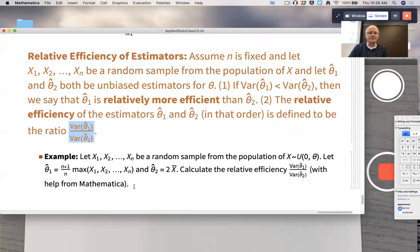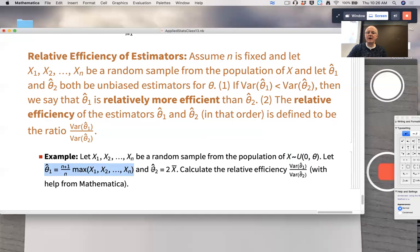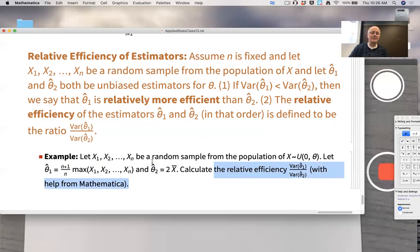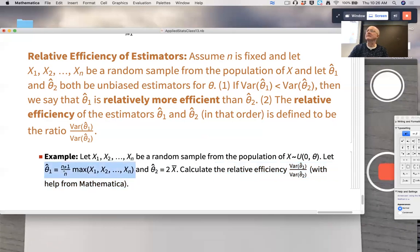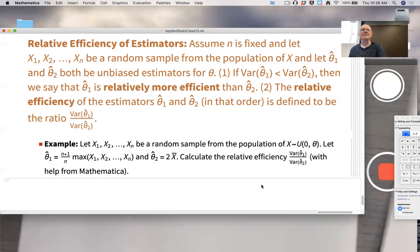So here's an example. Let X1 through XN be a random sample from a uniform distribution on the interval from zero to theta. Let theta 1 hat be N plus 1 over N times the maximum and theta 2 hat be 2 times X bar. Let's calculate the relative efficiency. If it's close to zero for fixed N, that means this is really a better estimator. If it's close to zero for all N, in fact, it doesn't matter what the sample size is, that means theta 1 hat is going to be, in general, better than theta 2 hat. Can I do this calculation in 14 minutes and try? Use Mathematica for help.